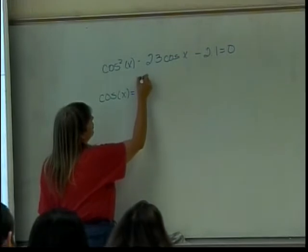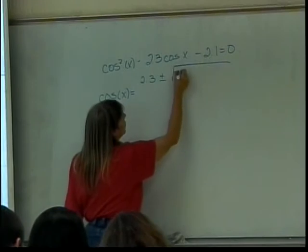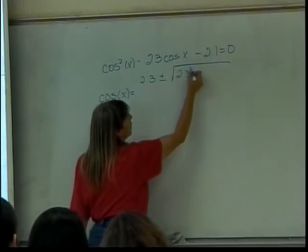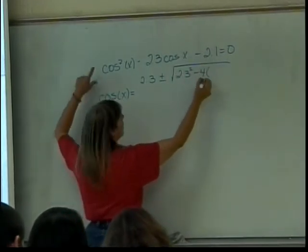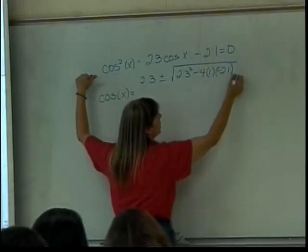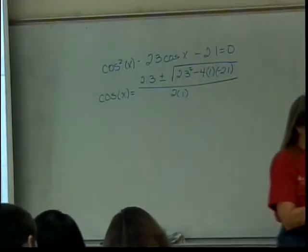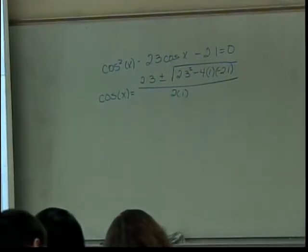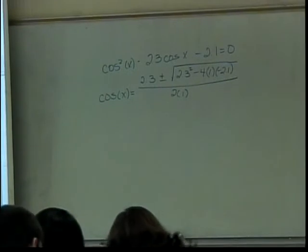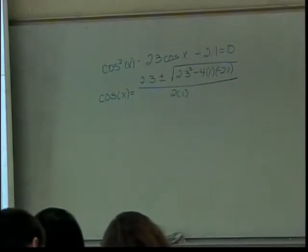So I'm going to find out what the cosine of x is equal to. That is negative b, so it's going to be 2.3 plus or minus the square root of b squared. So 2.3 squared minus 4 times a, which is 1, times c, which is negative 2.1, all divided by 2 times a, which is 1. Let's plug all that into the calculator.